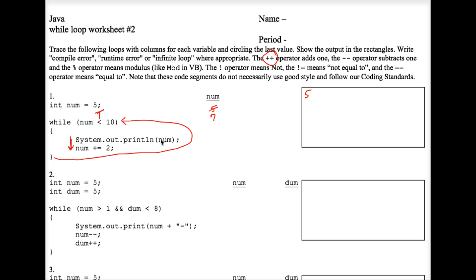We system out print num. Num, because of the ln, num, at this point 7, prints out on a new line. Num plus equals 2. That means we add 2 more to num. We go back up to the top. 9 is less than 10. Through the loop, system out print num. 9 prints. Num plus equals 2.